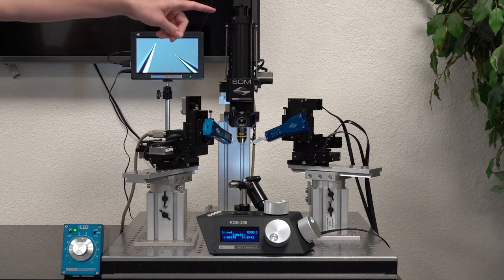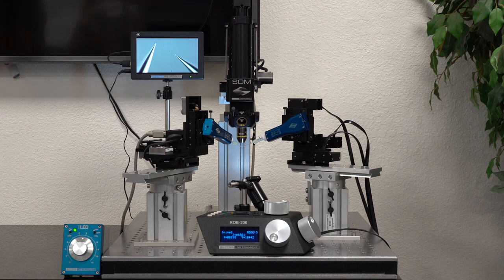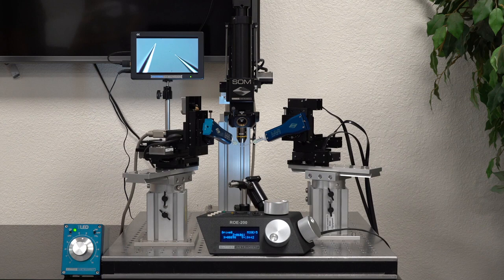The camera port here provides standard C-mount threading. You can adjust the rotation of the camera as well as the position relative to the tube lens.